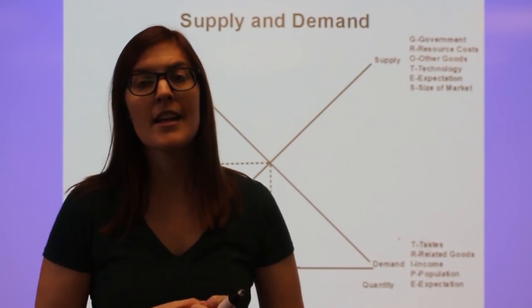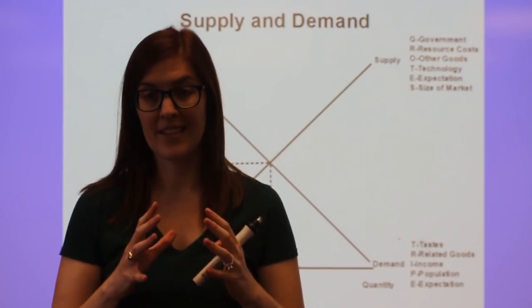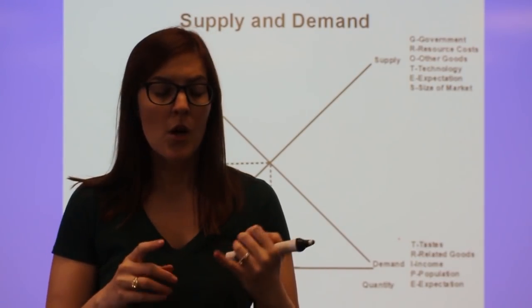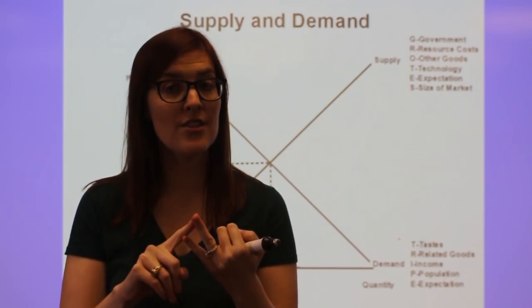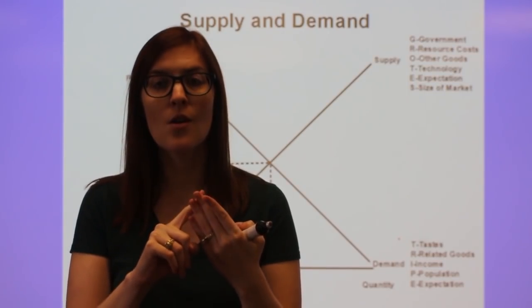R is related goods. Now this is the one you'll see the most often and a lot of things fit under this. We have wars, wages, natural disasters, oil, steel,